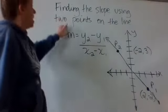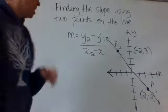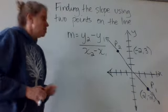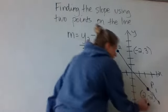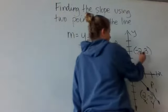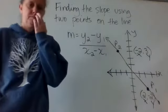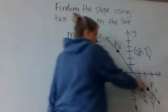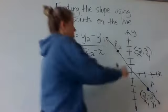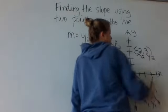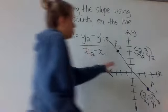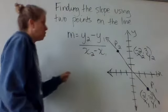So when you're finding the slope of the line and you know two of the points on that line, you can use what's called the slope formula. Remember, each one of these points has an ordered pair, which means it has an X coordinate and a Y coordinate. Since this is the first point, we will call it X one and Y one. Since this is the second point, we'll call it X two and Y two. Now that we know all of these numbers and what they represent, we can use this slope formula.